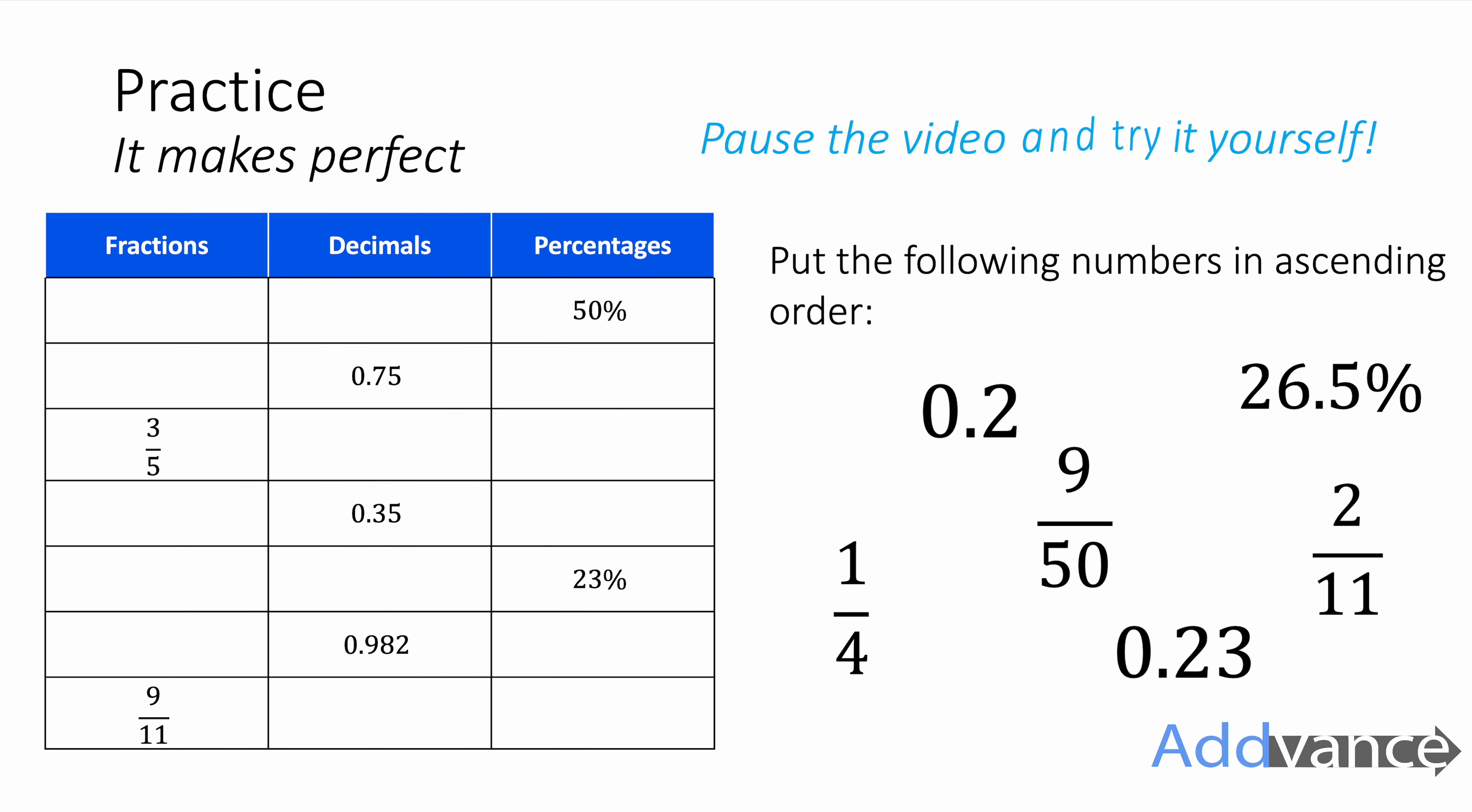Now I've shown you everything. I've shown you how to convert from fractions, decimals and percentages and convert between all of them. It's now time for you to pause the video and try this yourself. There are some practice questions on the screen for you to try. Try to complete the table to show me what all the equivalent fractions, decimals and percentages are. For example, the top row will be a half, 0.5 and 50%.